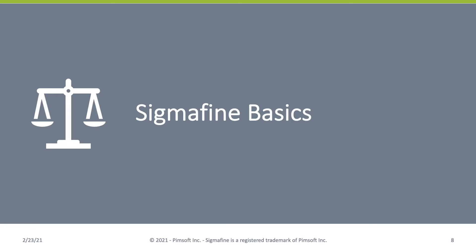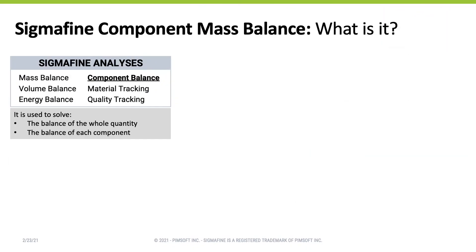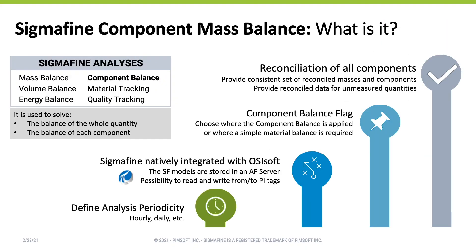Let's go to the Sigma Fine basics. Sigma Fine is an application that comes with many plugins — it's not just for mass and component balance. We can do tracking, mass, energy, and volume. Today we're focusing on the component balance analysis. This analysis solves simultaneously the balance on the whole quantity around each balance point — process unit, tank, nodes, etc. — as well as the named components that you are interested in. This provides a consistent data set of both reconciled mass and reconciled components for all your measurements, movements, and inventories.